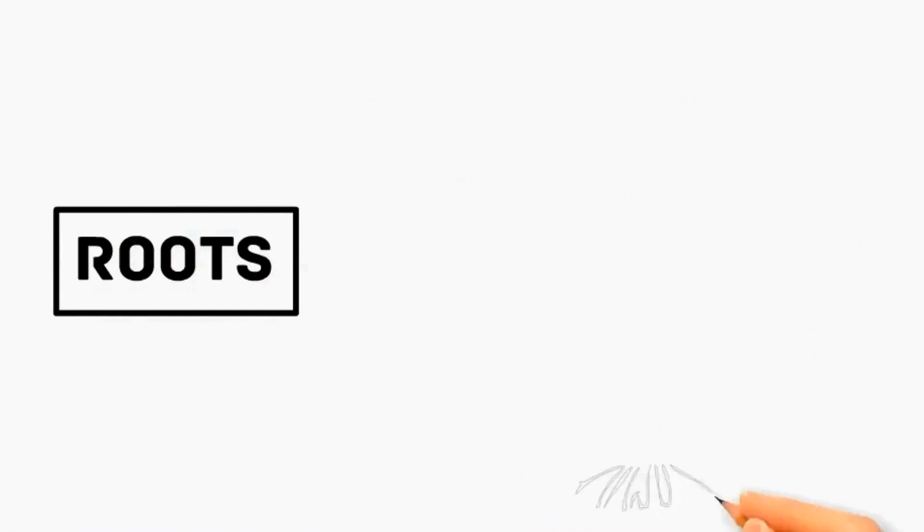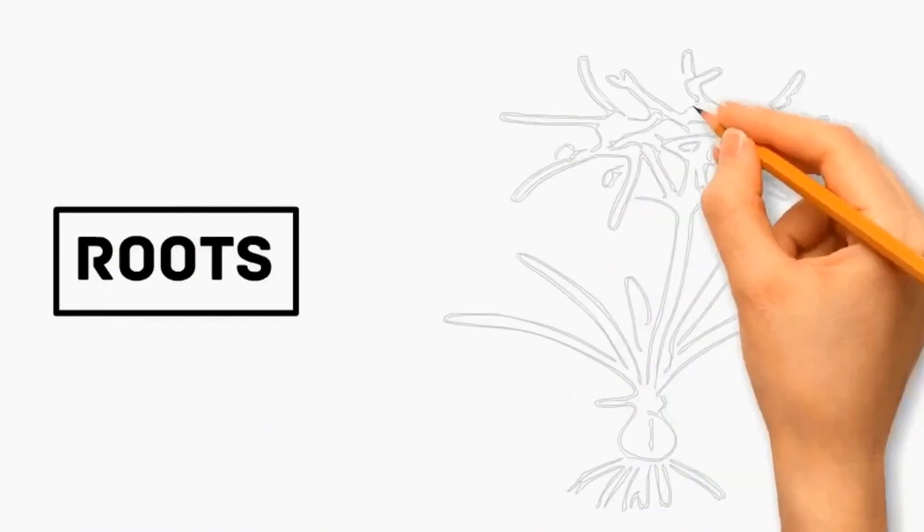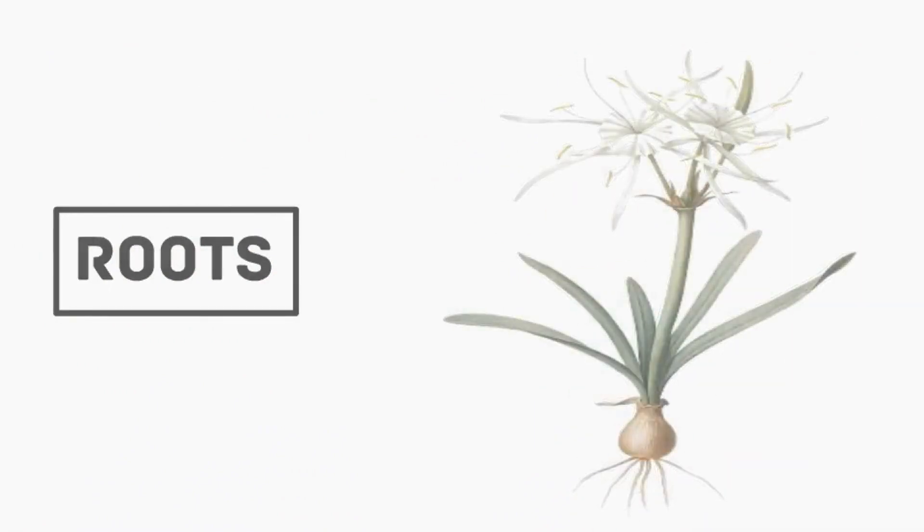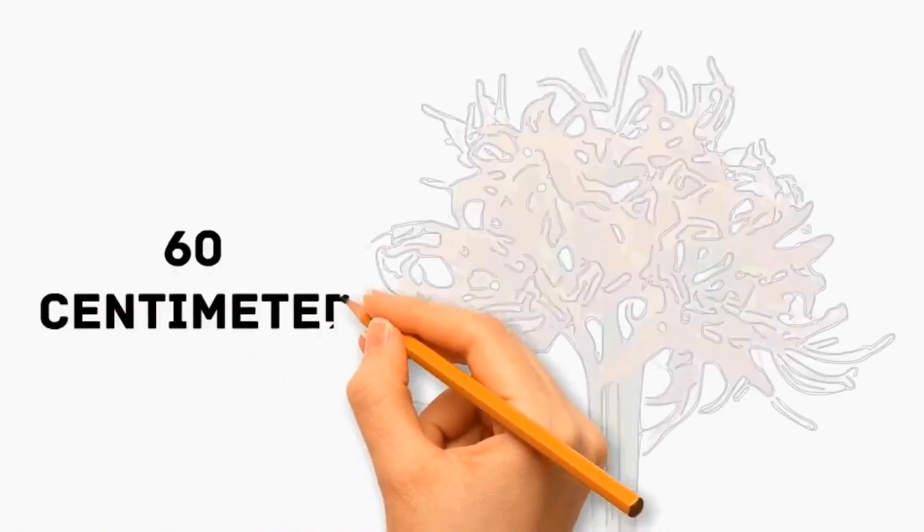Number four: Roots. It has bulbous roots that grow underground which help to anchor the plant in the soil and absorb water. This plant is 60 centimeters in height.